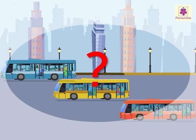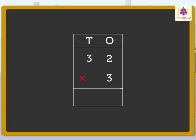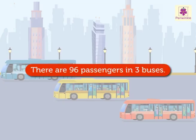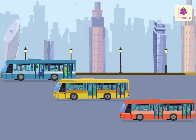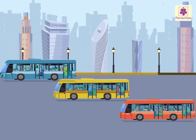2 into 3 is equal to 6 ones. 3 into 3 is equal to 9 tens. So the final product is 96. There are 96 passengers in three buses. It was great traveling by bus and meeting new people!